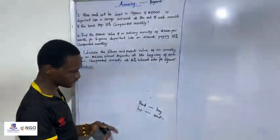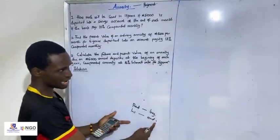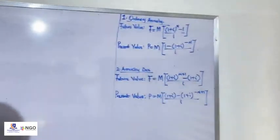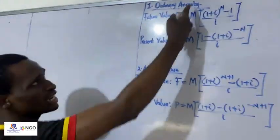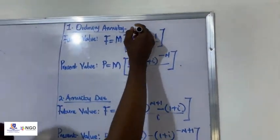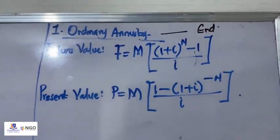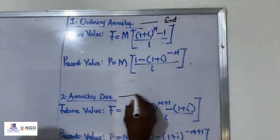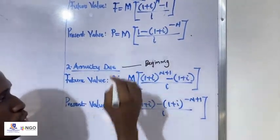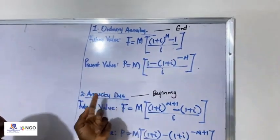That leads us to the two major types of annuity: ordinary annuity and annuity due. Ordinary annuity is the payment made at the end of each period, while annuity due is the payment made at the beginning of each period. Ordinary annuity is made at the end; annuity due is made at the beginning.